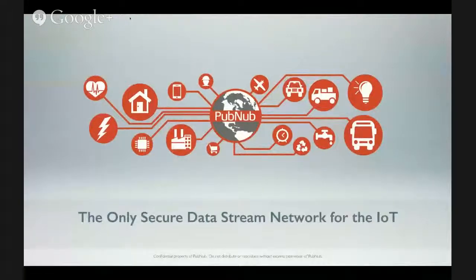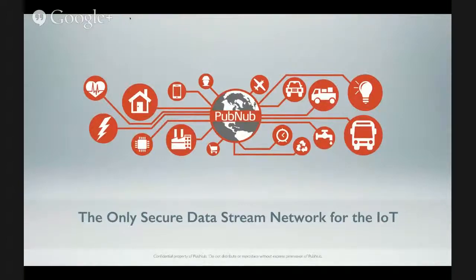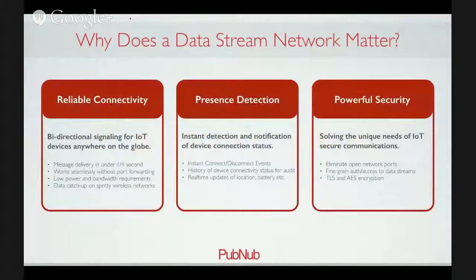You've probably already heard about the many technical considerations encompassing an Internet of Things deployment. Cisco has predicted 50 billion devices will be on the Internet by 2020. This means engineers will have to consider new issues like scalability, spotty networks, proxy servers, low connectivity, and so much more. Regardless of your provider, you need some basic considerations for your data stream network: connectivity, presence, and security.